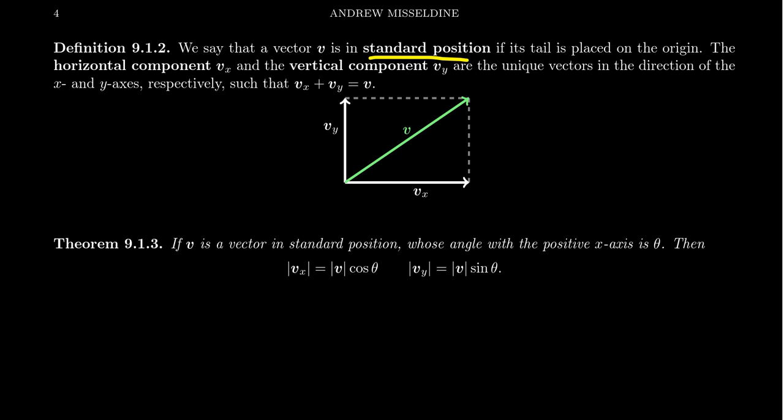For these vectors, there are two components: the horizontal component, which we'll call vx, because x is the horizontal variable, and then there's the vertical component, which we'll call vy, because y is the vertical variable. These are two vectors which represent pieces of the original vector v. If you were doing vectors in three dimensions, you'd have three components for the variables x, y, and z. But in our lecture series, we'll be exclusive to two-dimensional vectors.